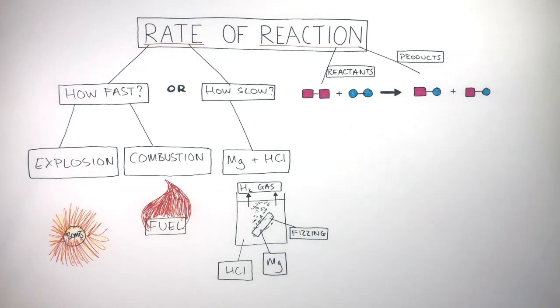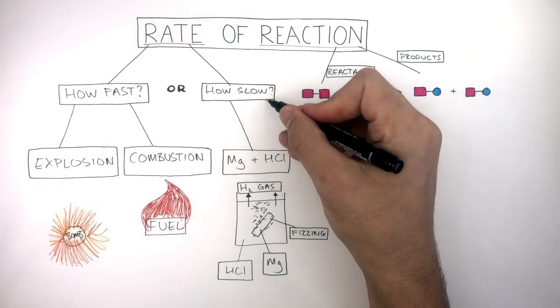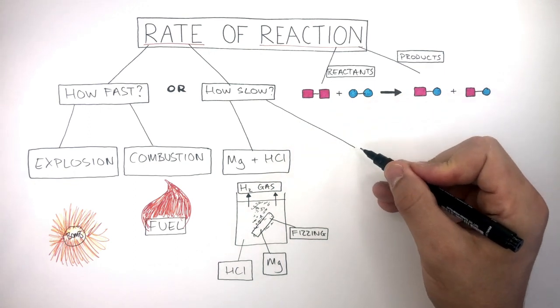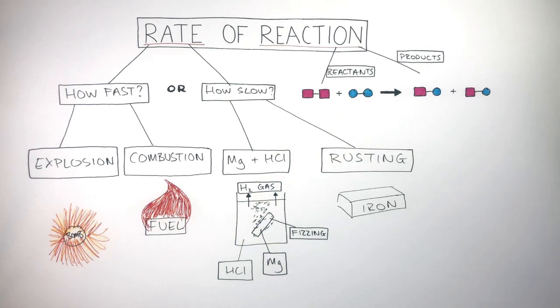This chemical reaction is relatively fast compared to other chemical reactions but much slower compared to combustion and an explosion. An example of a slower chemical reaction is rusting. This is where iron reacts with water and oxygen to form an orangey-brown color.